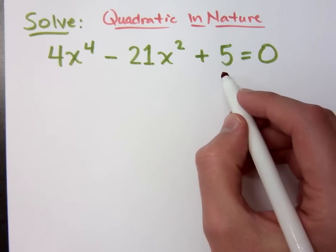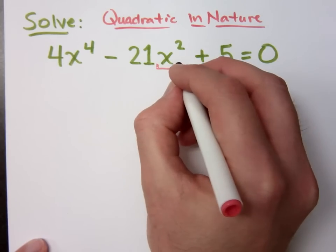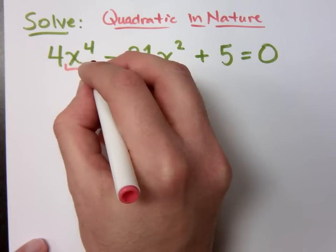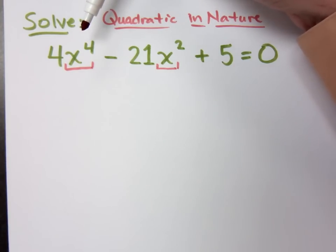You've got your constant, just like you see with any quadratic equation. Then look at this variable piece right here, this x squared. If the guy in front of him, like this, is it square? Then it's quadratic in nature. What would happen if you were to square x squared? What do you get? X to the fourth. You get x to the fourth. So this is what we call quadratic in nature.